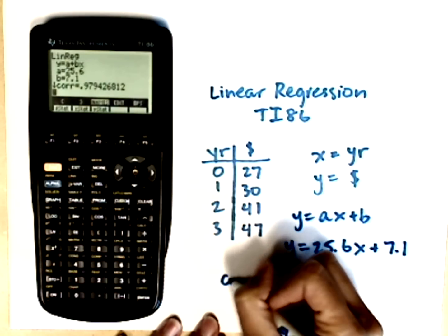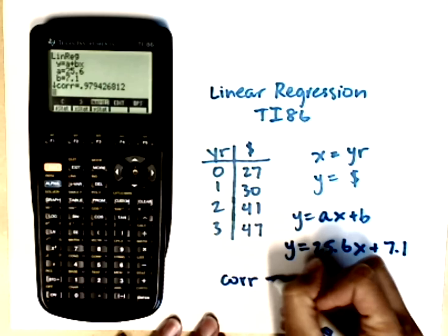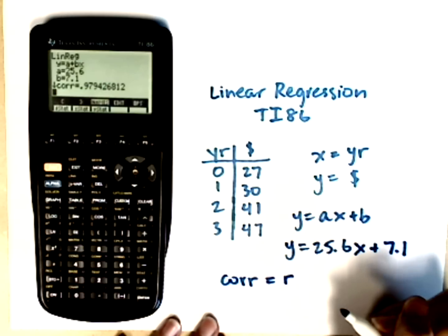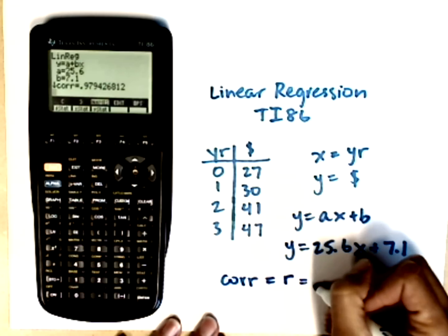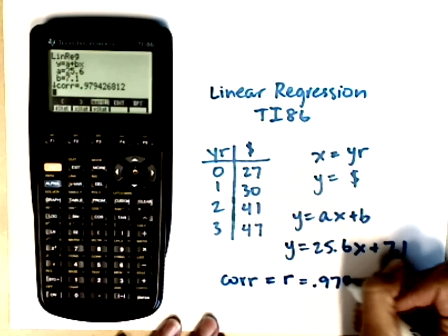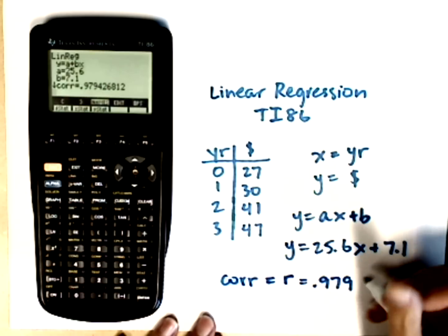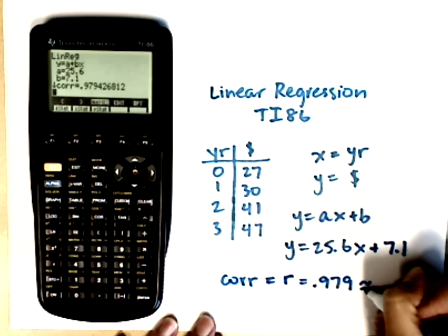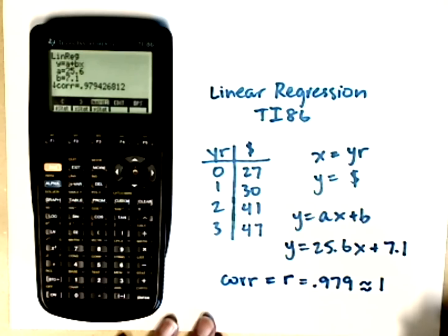It also gave me a correlation coefficient. The correlation coefficient is r, and the r value that it gave me is .979. We want that to be close to 1. Because that's fairly close to 1, we can say that we have a strong linear correlation. If it was close to 0, we'd say that we didn't have a strong linear correlation.